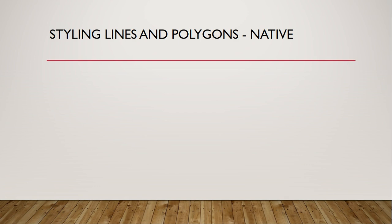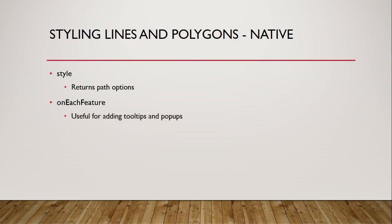Welcome back. We've made it through the options for styling points. In this lecture, we'll take a look at some native Leaflet methods for styling lines and polygons. These are simply the same path options we've seen already — the only thing new is the way we handle them when the GeoJSON file is loaded. We don't have a pointToLayer function for lines and polygons, but we have two other functions: the style option, which returns a set of path options, and the onEachFeature option, which provides access to each feature for processing such as adding popups or tooltips. We can still use the filter option with lines and polygons.